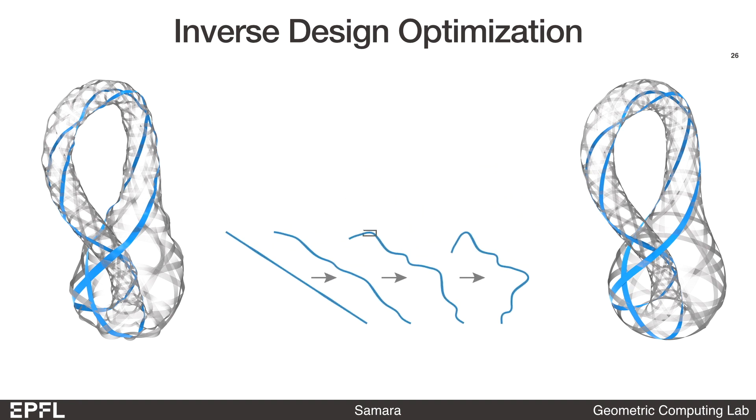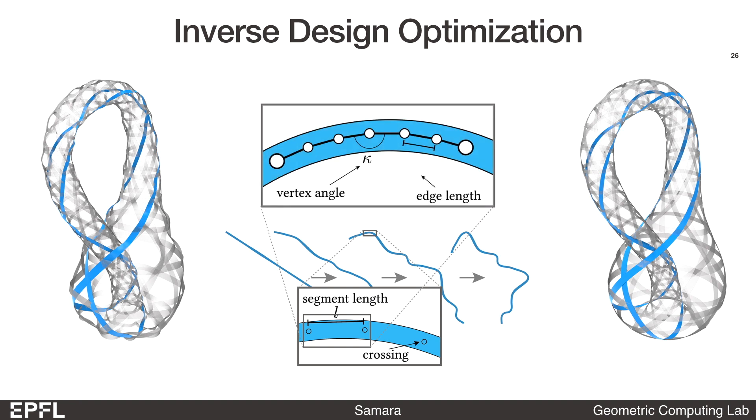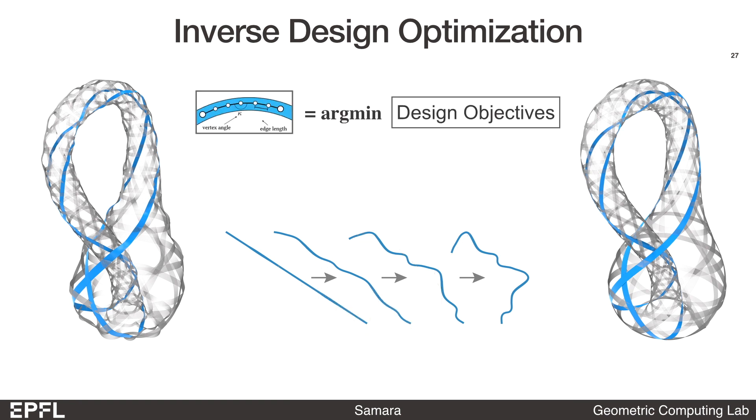In our inverse design method, the optimization parameters are the length and curvature of the ribbons. To compute these parameters, we solve a multi-objective optimization problem. Our objectives include approximating the target shape as closely as possible, reducing the elastic energy, and reducing the contact forces between the ribbons.